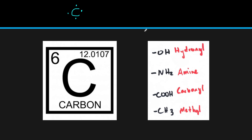There are some subgroups you should know for identifying different molecules. If you see an OH, that's going to be a hydroxyl group. If you see NH2, that's an amine. If you see COOH, it's going to be a carboxyl group. And CH3 is a methyl group.